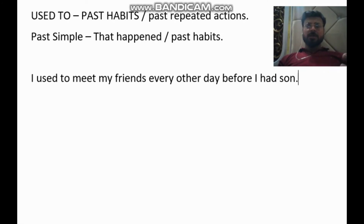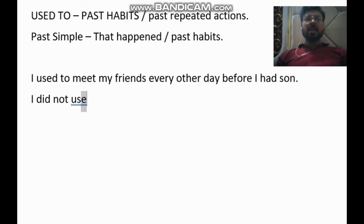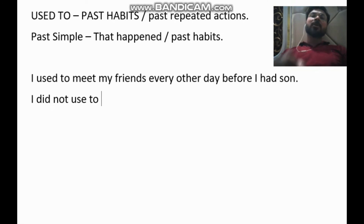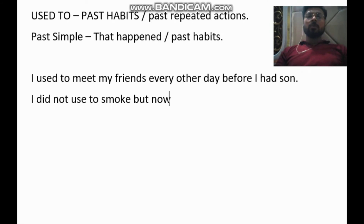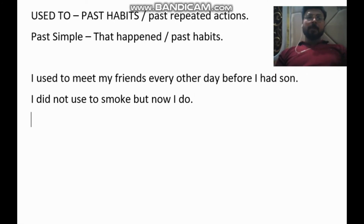For the negative form, we follow the rules of past simple tense, so we use the first form of the verb. It becomes: 'I did not use to' — not 'used to' but 'use to' in the negative. For example: 'I did not use to smoke, but now I do.' This means smoking was not my habit before, but now I do it repeatedly.